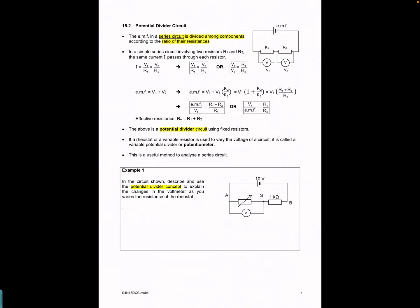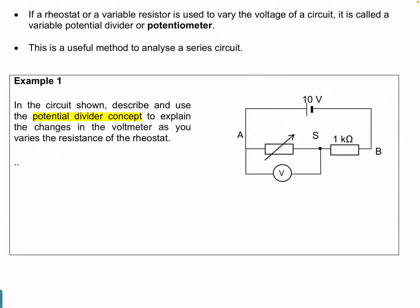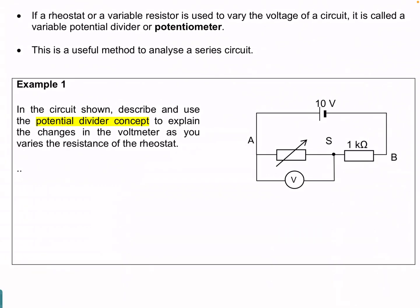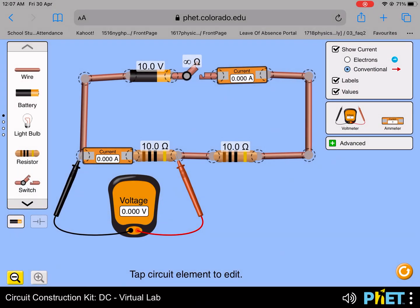In our notes on potential divider circuit, we have an example which shows a rheostat in series with a 1k ohm resistor connected to a 10 volt battery. We shall now show this using the PhET simulation circuit.